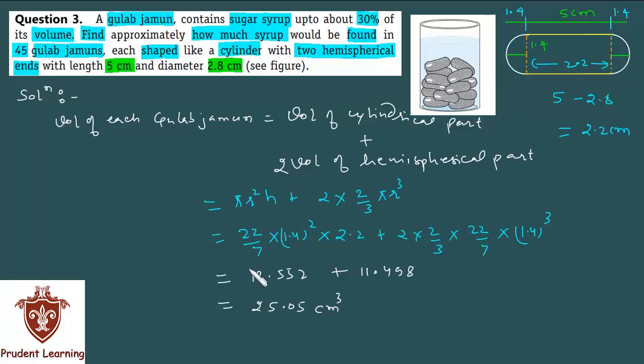So you got the volume of one Gulab Jamun. Each Gulab Jamun - remember, total how many Gulab Jamuns are there? 45. Therefore, volume of 45 Gulab Jamuns is 45 into volume of each Gulab Jamun.